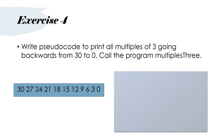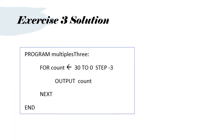Another exercise. Write pseudocode to print all multiples of 3 going backwards from 30 to 0 — call the program multiples 3. You're going to have to think cleverly about the limits of your FOR loop in this one. Please pause the video. The solution: program multiples 3. FOR count, arrow — we're going to count from 30 to 0, and STEP minus 3 every time we go around the loop. OUTPUT count, NEXT, and END.